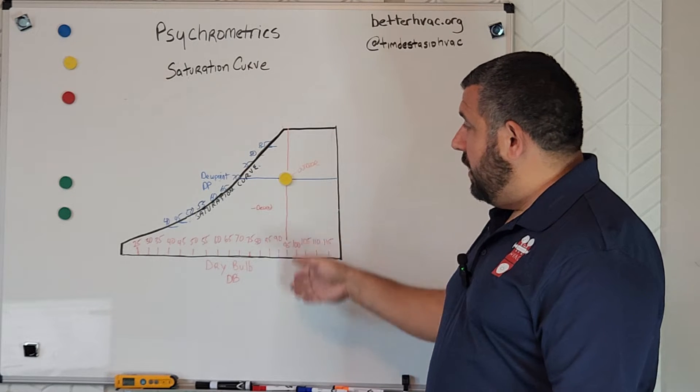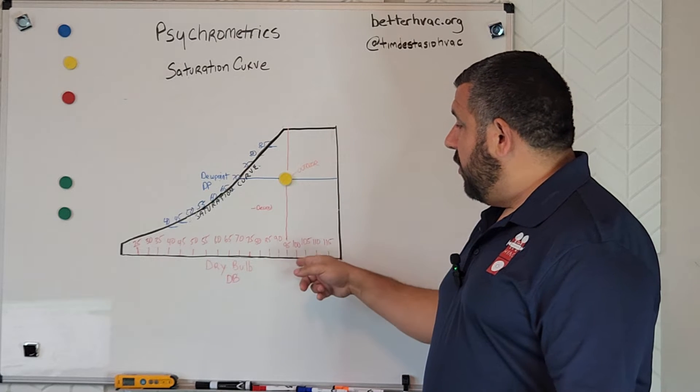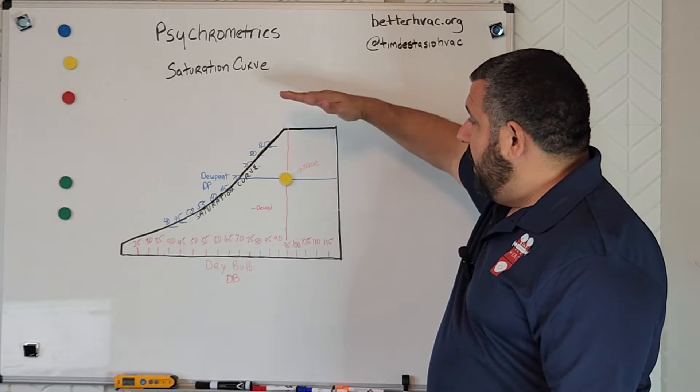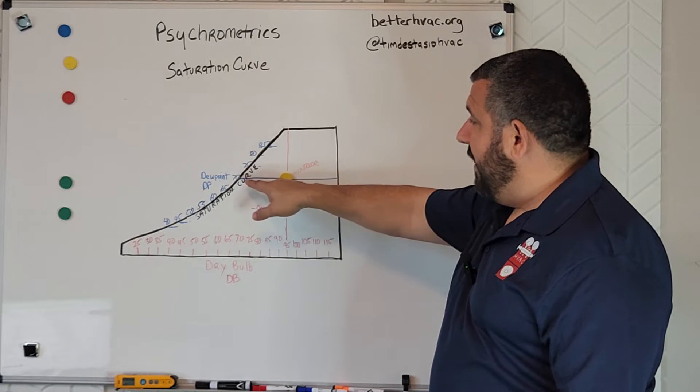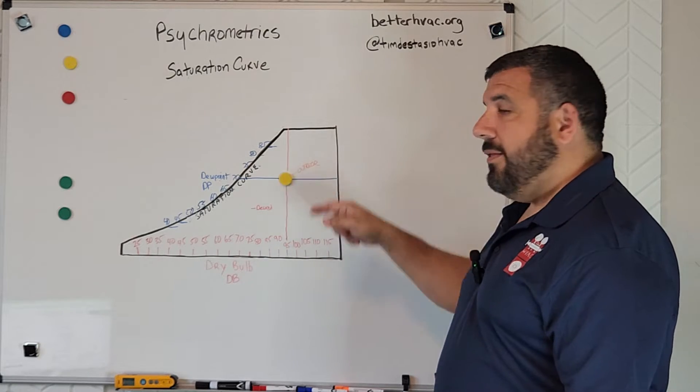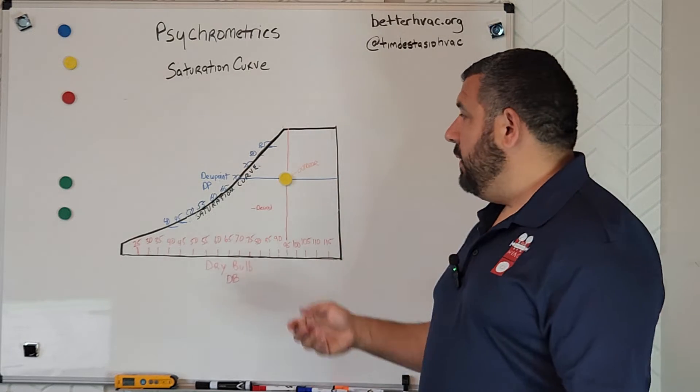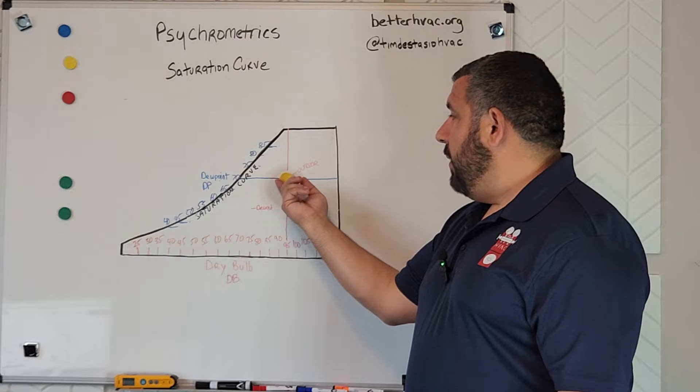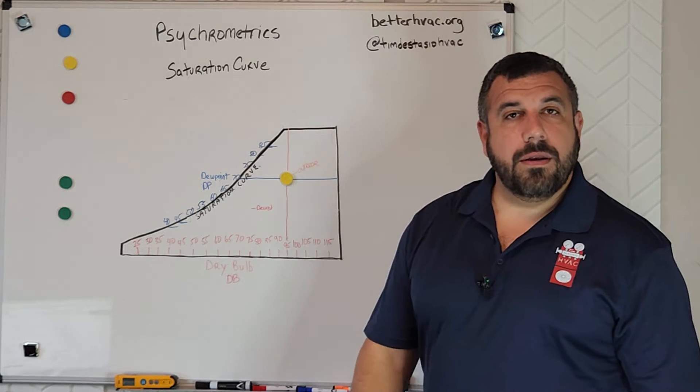So last time we plotted a point on the psychometric chart, we plotted a 95 degree dry bulb and a dew point of 70 degrees. And so really where these two lines intersect, that's called our operating point, and this is our outdoor operating point. That's the outdoor conditions.